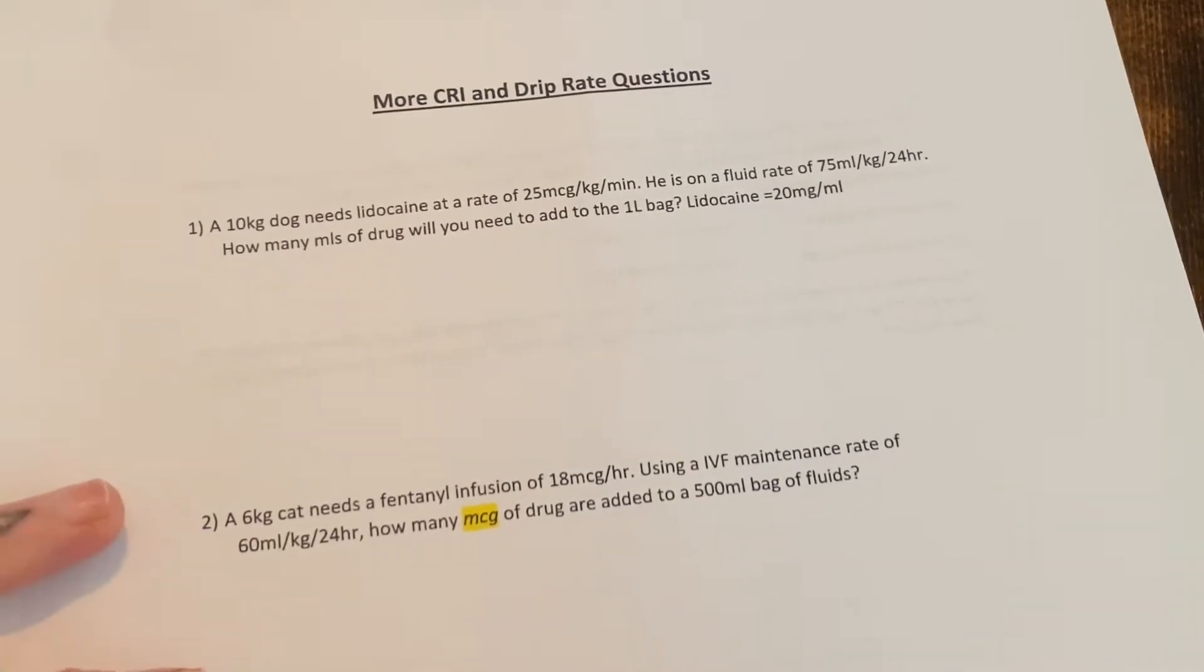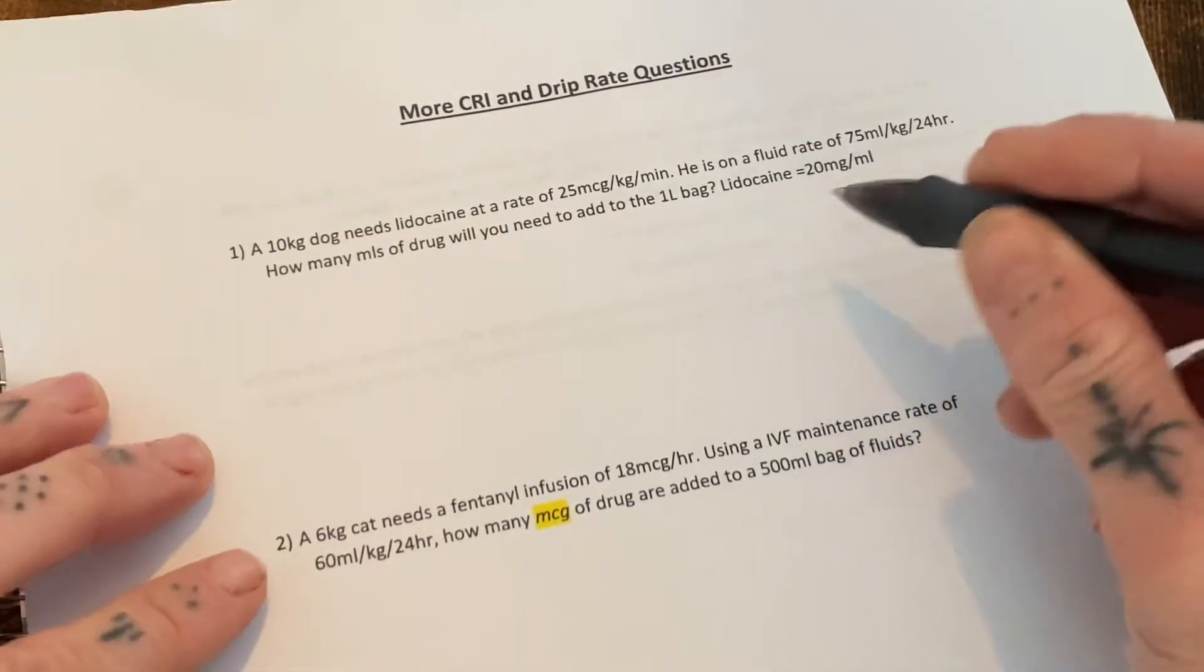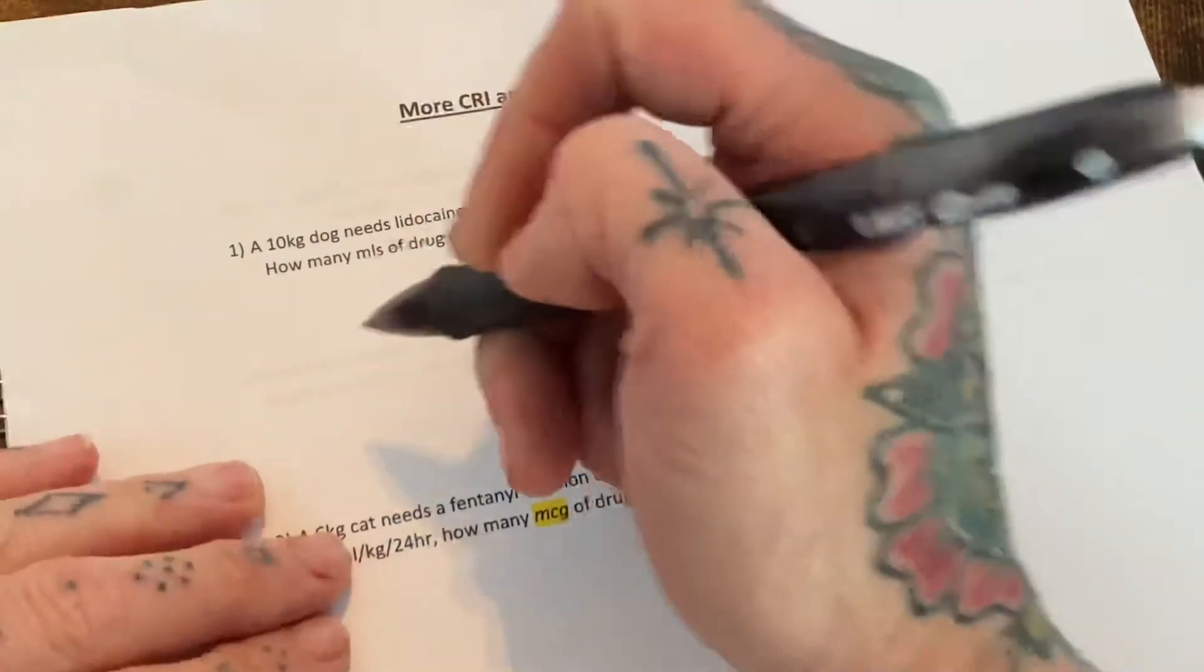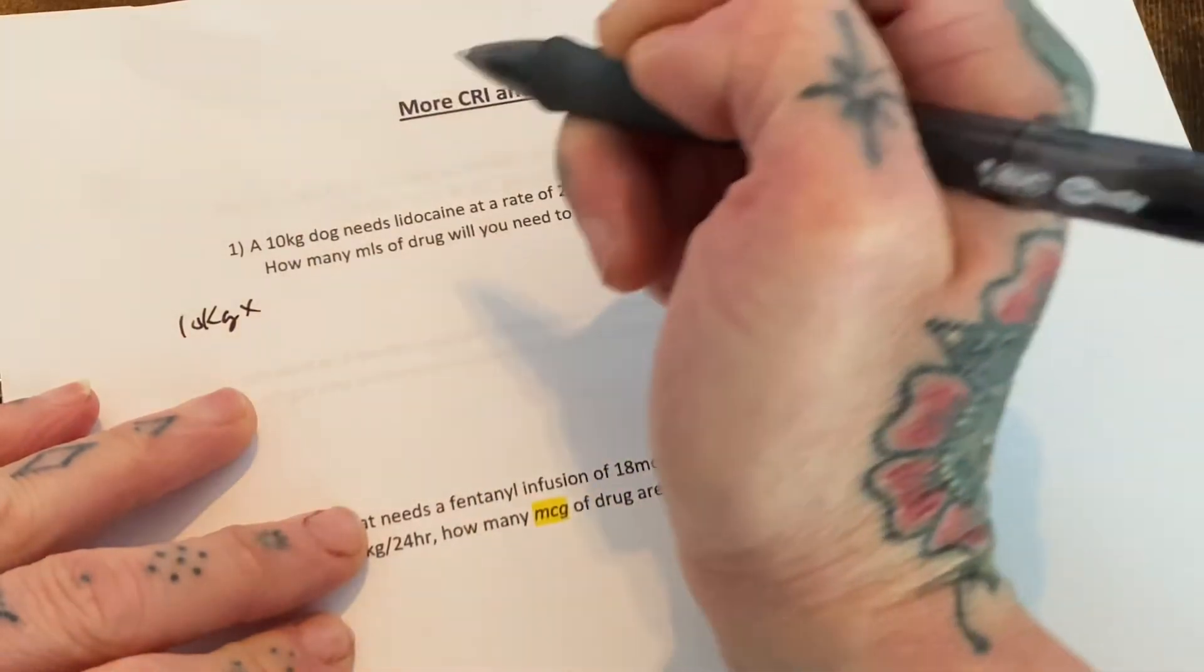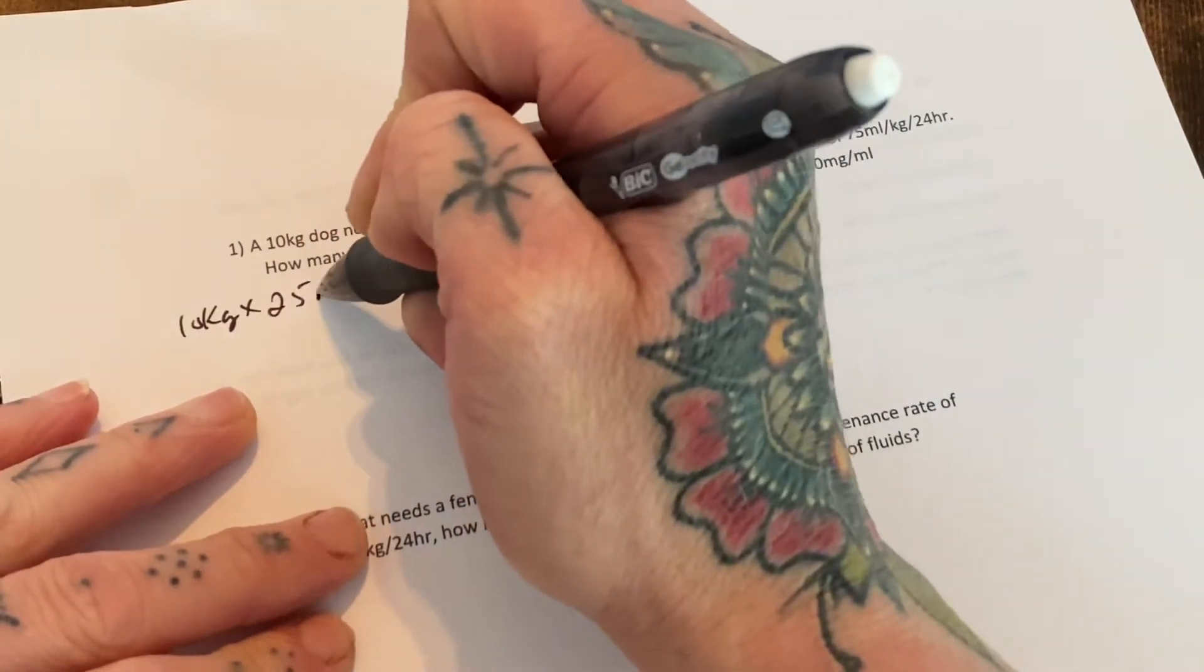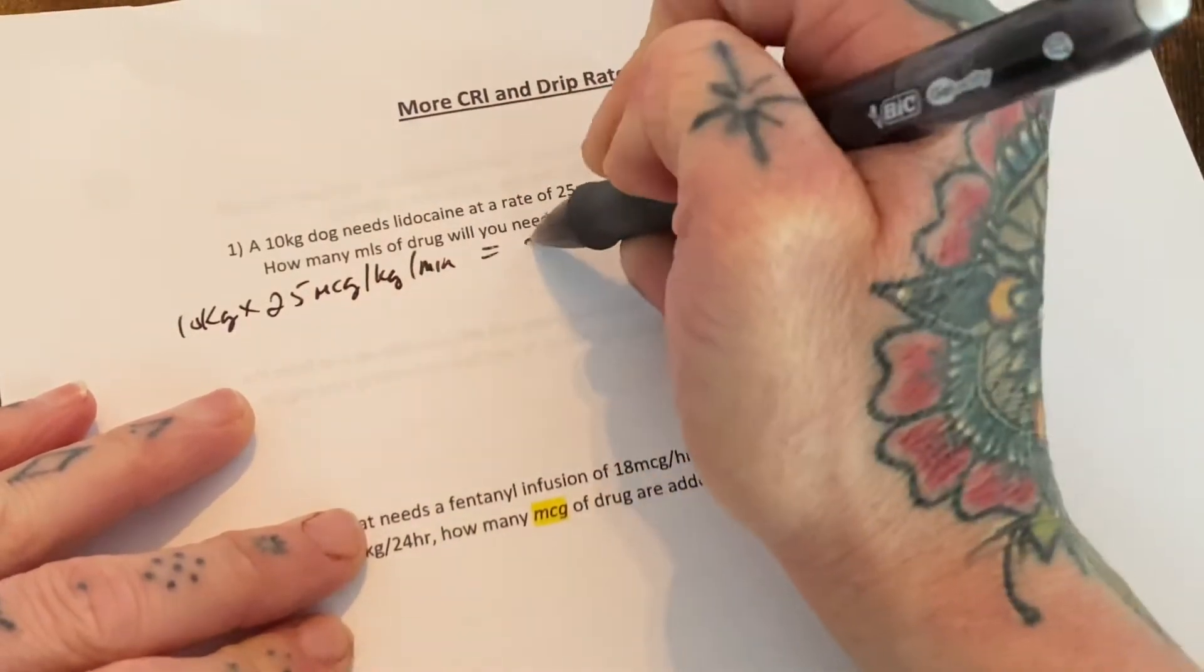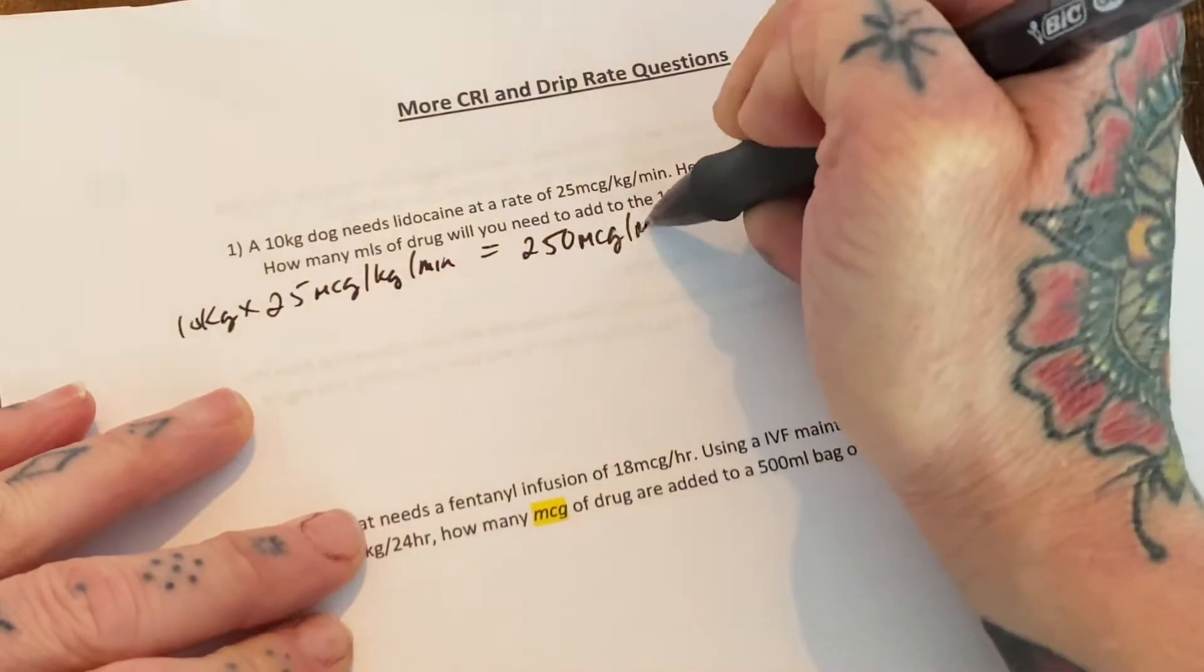So the first thing to do would be figure out how many micrograms per kilogram per minute and then work your way down the line. So 10 kilograms times 25 mcg per kg per minute equals 250 micrograms per minute.